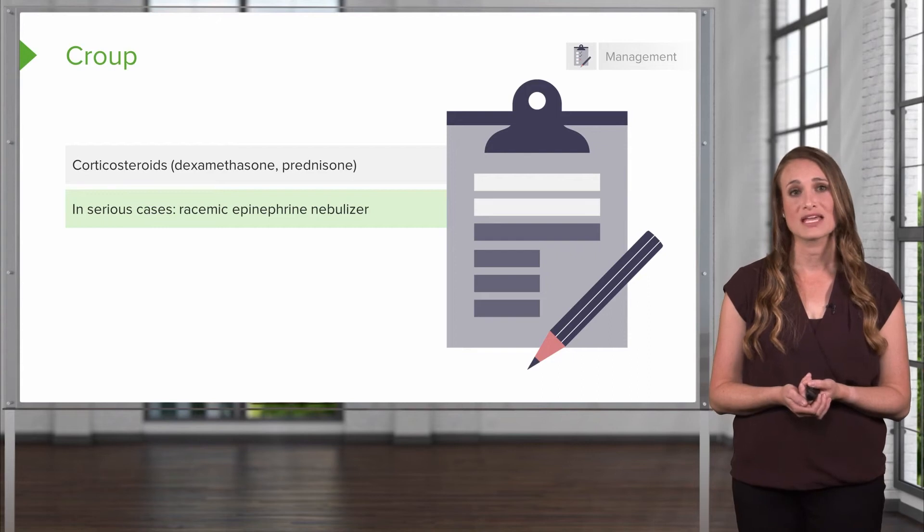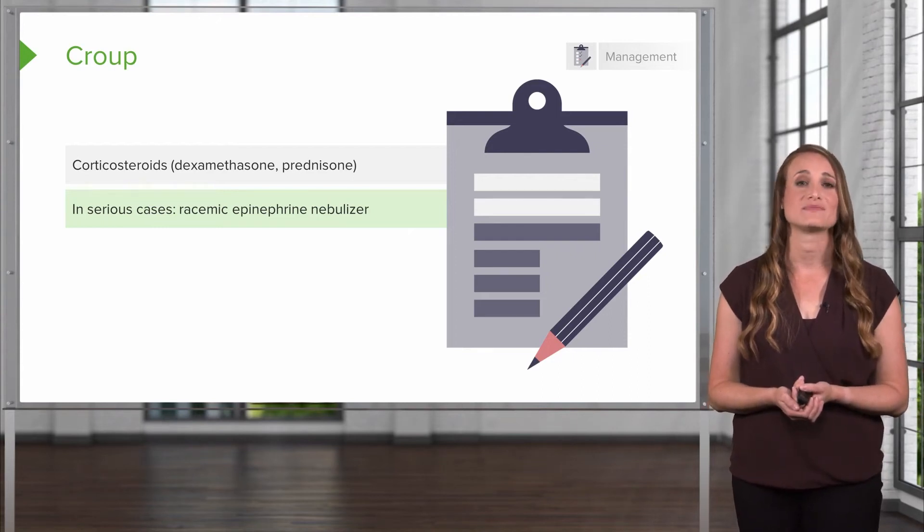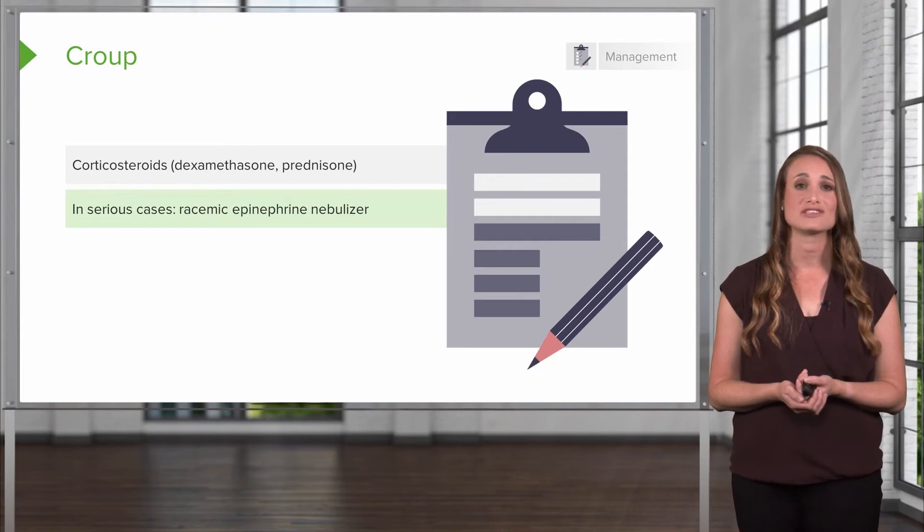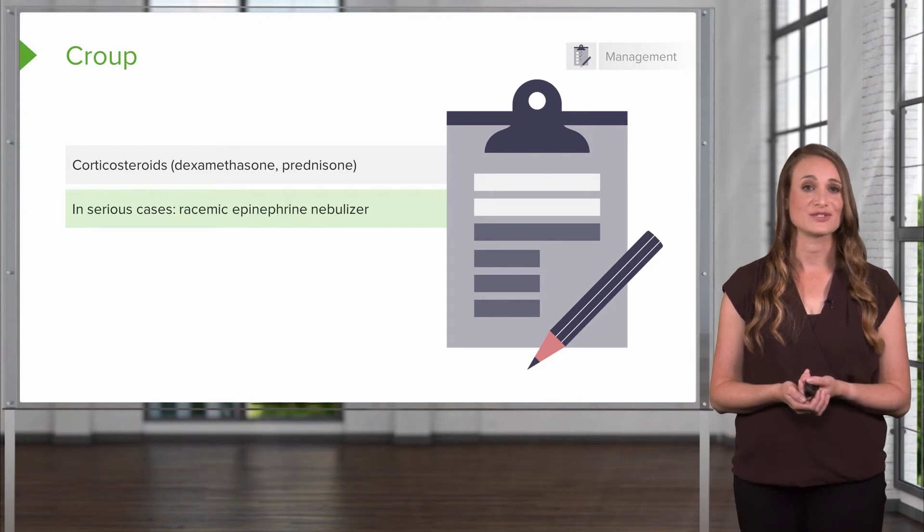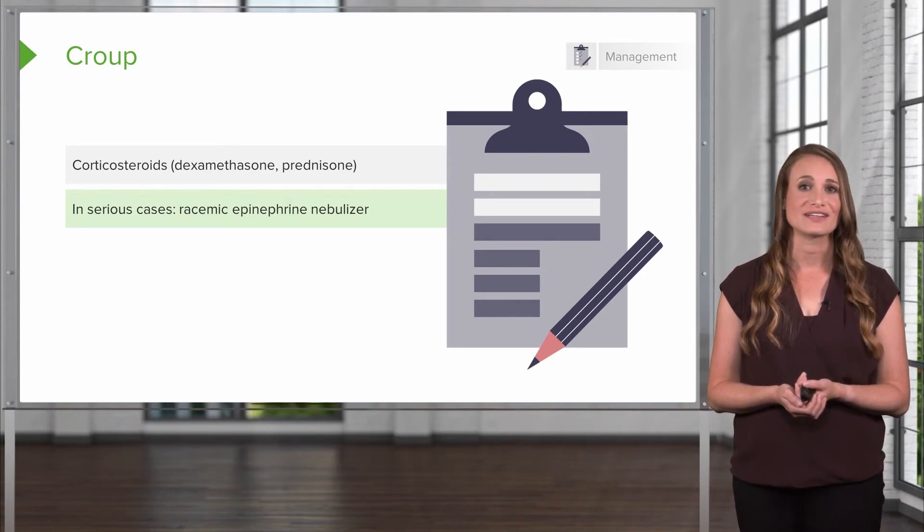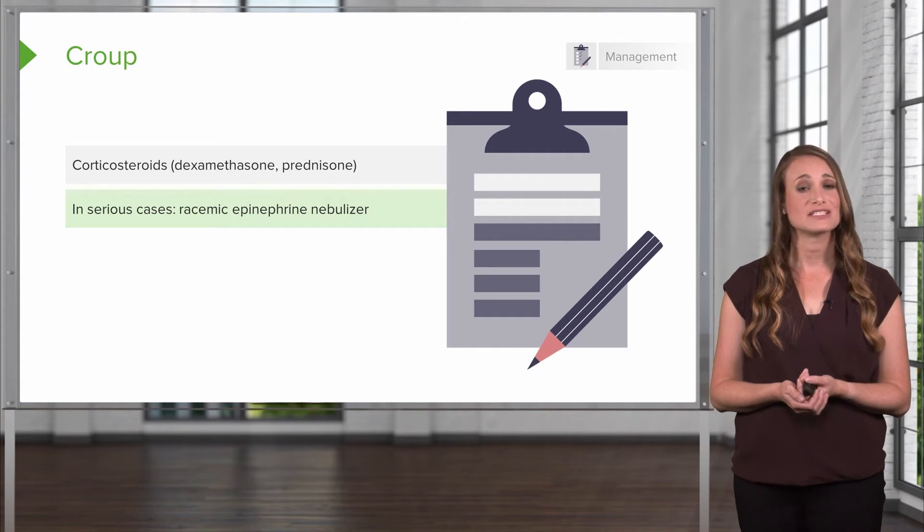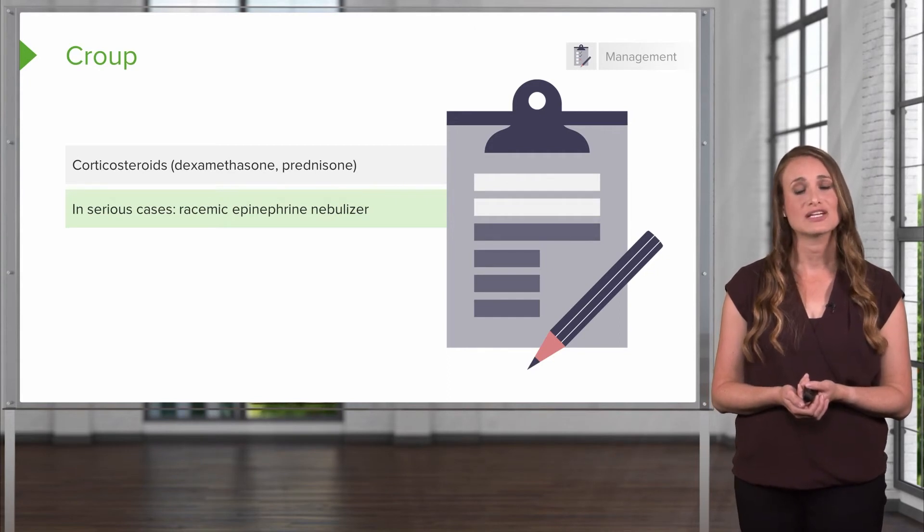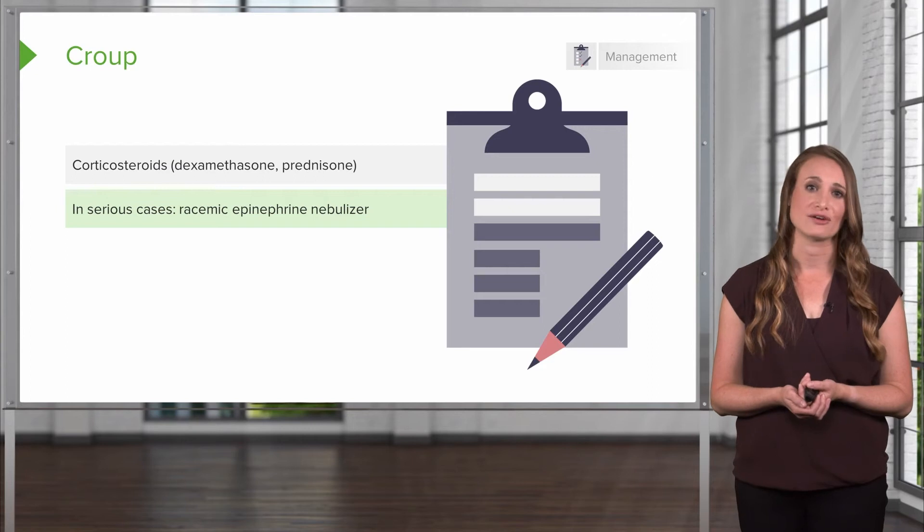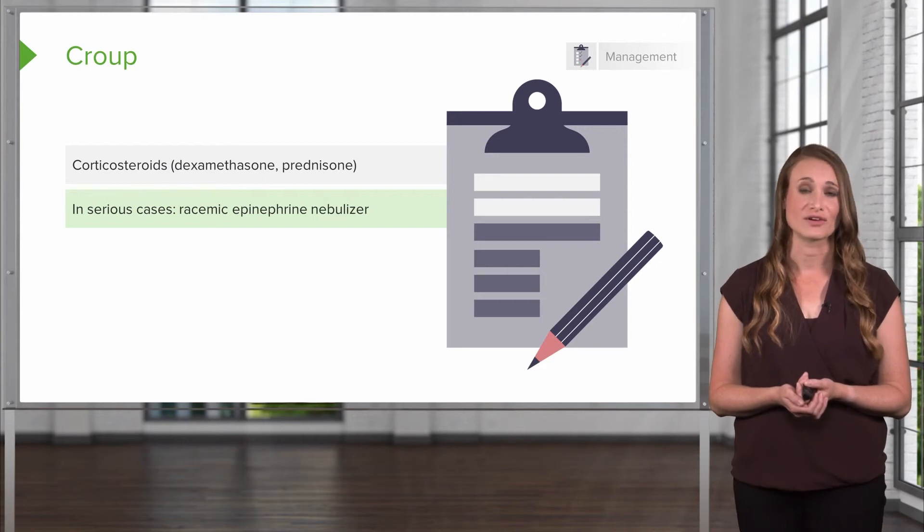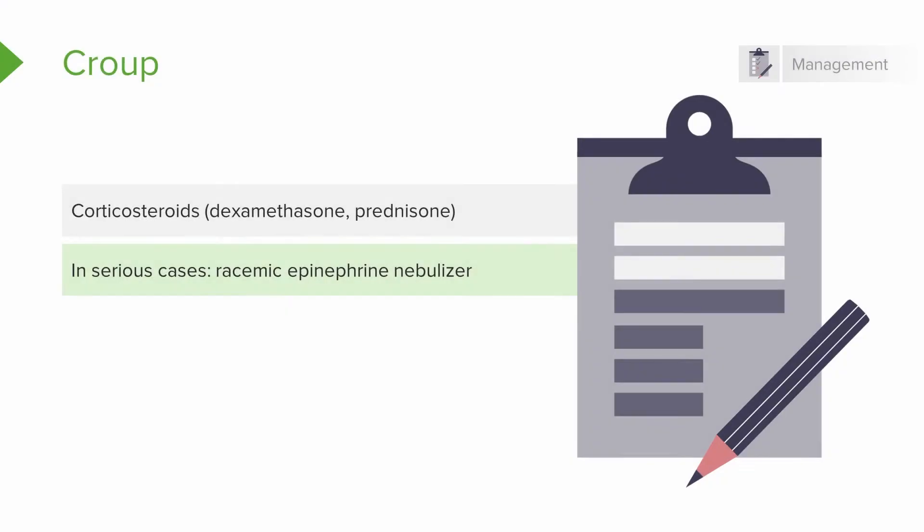Another option in more extreme cases is racemic epinephrine. This is when the patient's airway is being acutely compromised and the patient does not have hours to wait on their steroids to work. This is administered via a nebulizer treatment. It will very quickly decrease the airway swelling and should be done in a hospital setting because any patient that requires racemic epinephrine is at risk for airway compromise due to the severity of their croup. Here's a child receiving racemic epinephrine nebulizer treatment, and you can see they also have a nasal cannula with some supplemental oxygen.